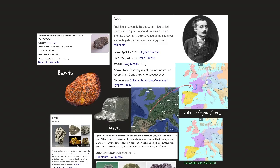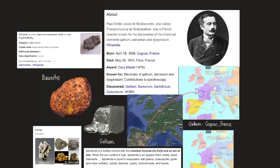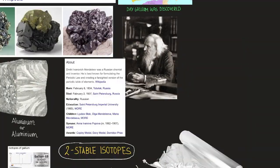So gallium was discovered in Paris by Paul Émile Lecoq de Boisbaudran, also called François Lecoq de Boisbaudran, was a French chemist known for his discoveries of the chemical elements gallium, samarium, and dysprosium. He observed a new violet line in the atomic spectrum of some zinc, yet extracted from a sample of zinc blend ore, or ZnS. He knew it meant that an unknown element was present. What Boisbaudran didn't realize was that its existence and properties